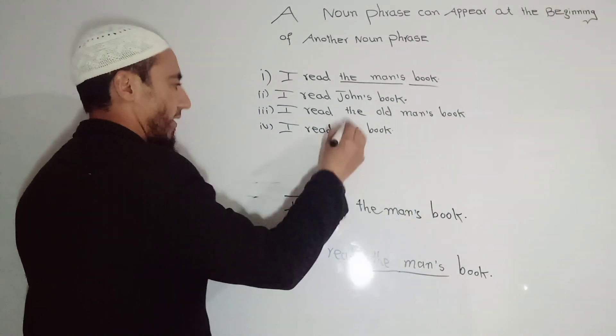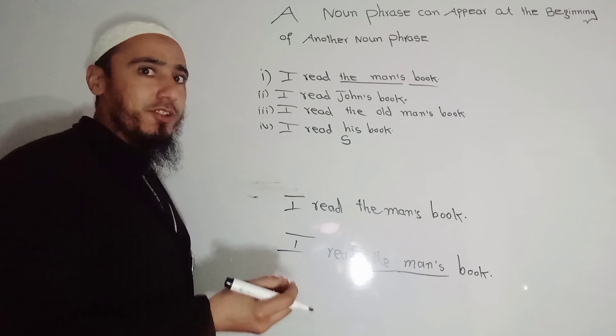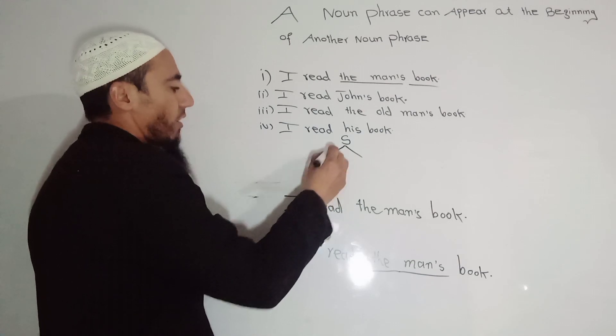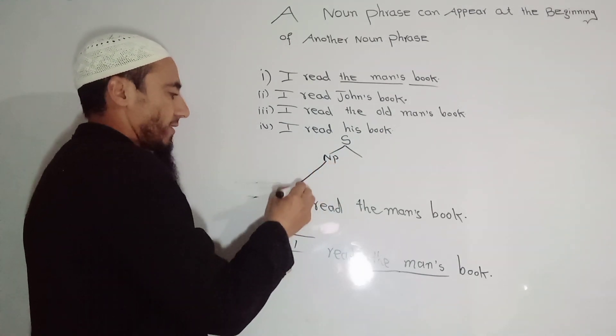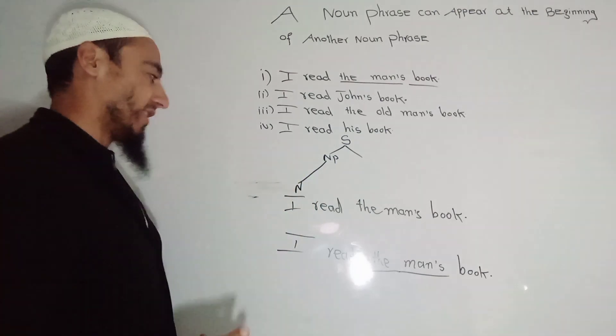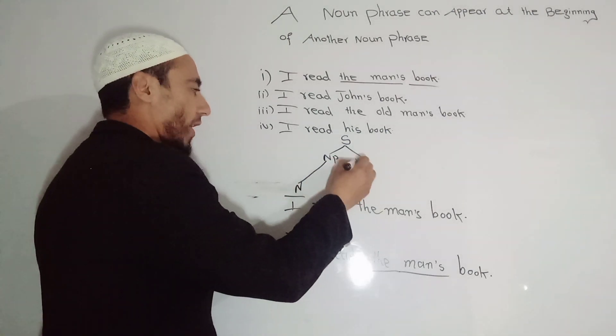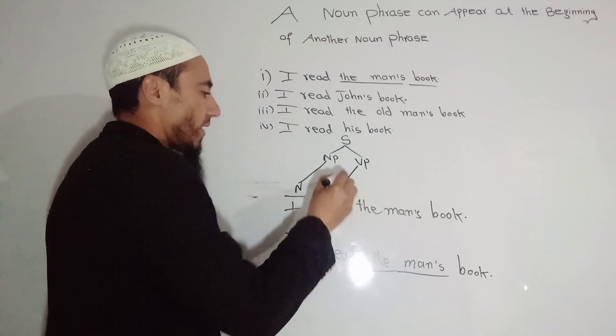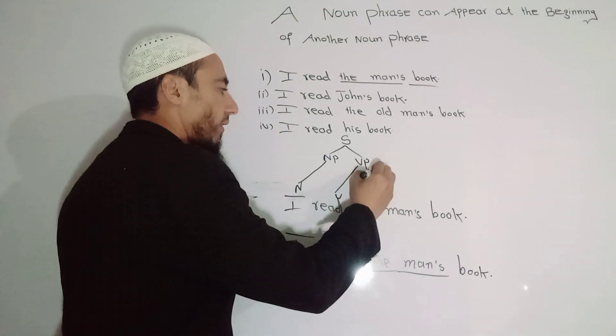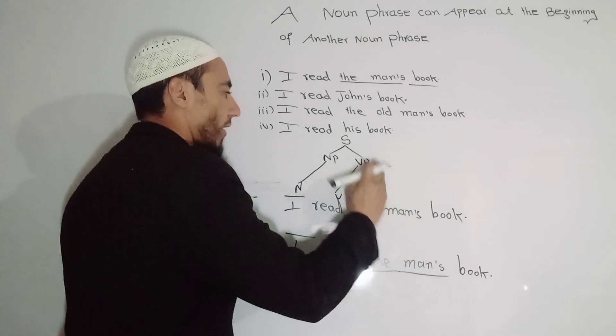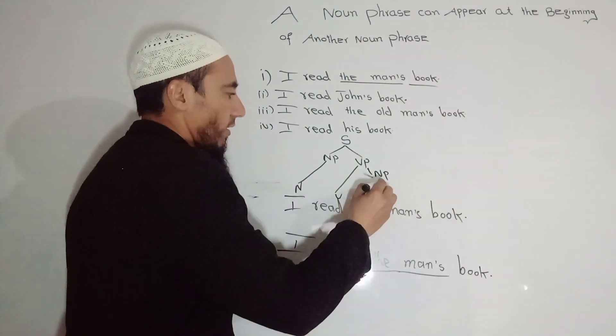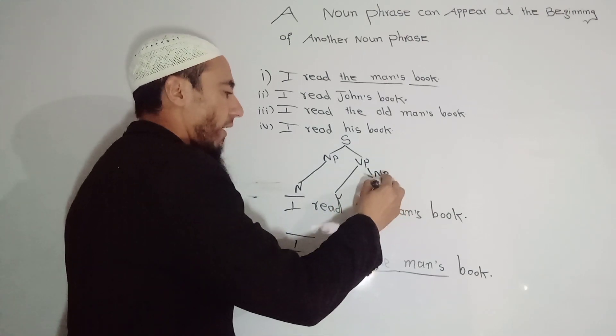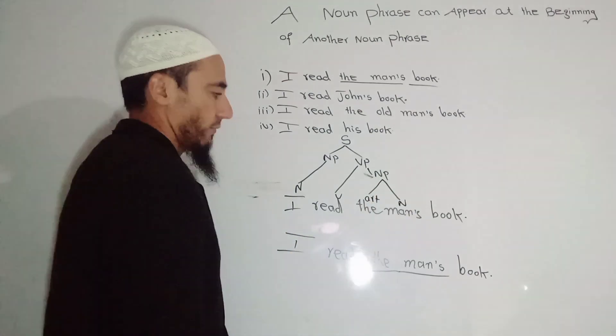See now, we have sentence S. This is a string which is called the root node. In sentence, we have NP. What is NP here? We have pronoun that is 'I.' So I'm writing N, which means it is noun phrase also. And we have VP, which means verb phrase. So in VP, we have 'read,' that is V. Now we have 'the man.' Yes, we have 'the man,' that is NP. So we have 'the man,' that is N.